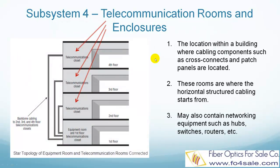The telecommunications rooms and enclosures are locations within the building where cabling components such as cross-connects and patch panels are located. These rooms or enclosures are where the horizontal structured cabling starts from, and they may also contain networking equipment such as hubs, switches, and routers. This figure shows the relationship of telecommunications rooms to the backbone cabling and equipment rooms.